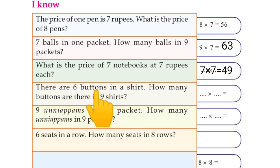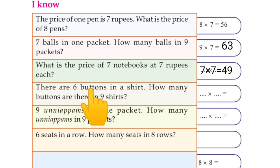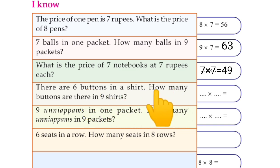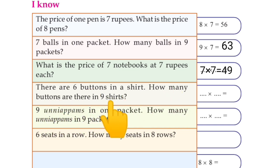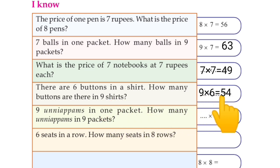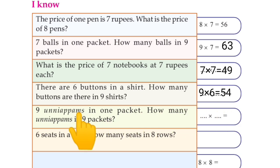There are six buttons in a shirt, so one shirt has six buttons. How many buttons are there in nine shirts? That is equal to 54.